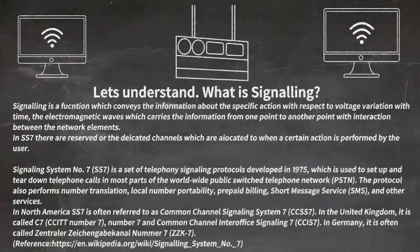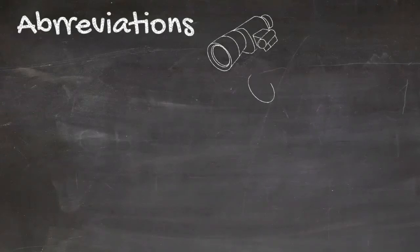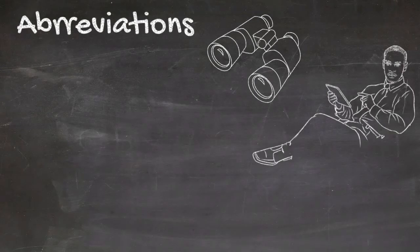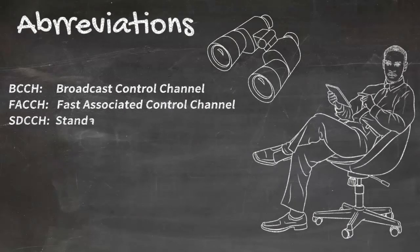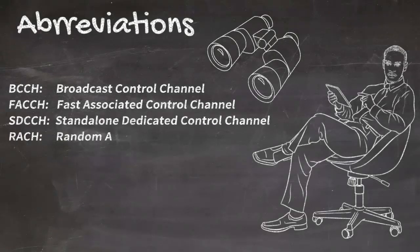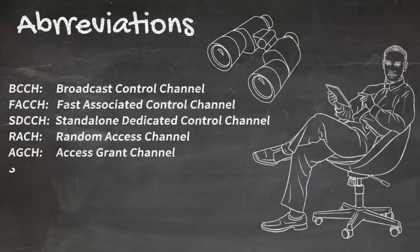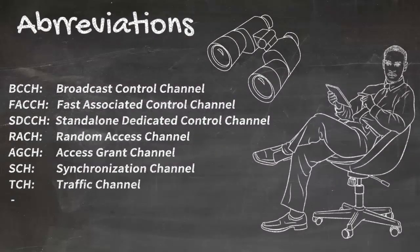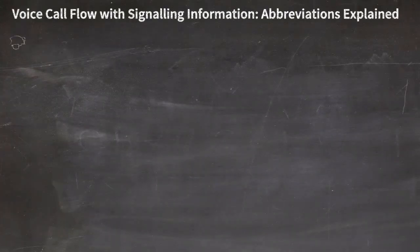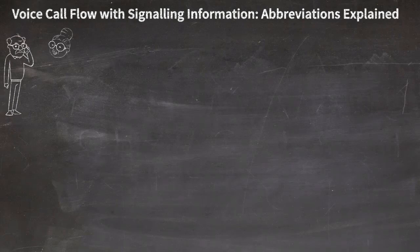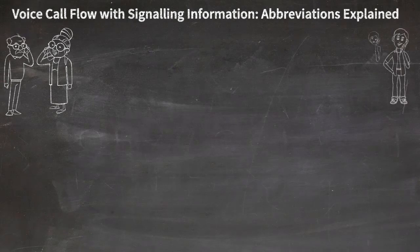Now let us see the terms associated with signaling, because whenever signaling is happening there are standard terminologies used for identifying signaling information. Those are BCCH, FACCH, SDCCH, RACCH, AGCH, and SCH. The full forms are already mentioned. Also the TCH channel, FCCH channel, and the PCH channel. Each and every signal, whenever a call is originated, has a specific function to carry messages from one network element to the other.